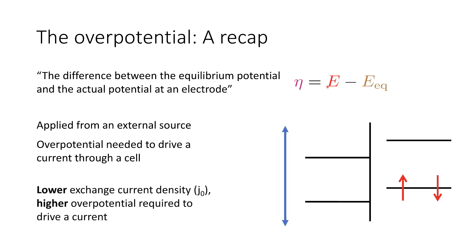A lower exchange current density means a slower rate at which electrons are exchanged at equilibrium, and therefore the higher the overpotential we need to drive a current through the cell.